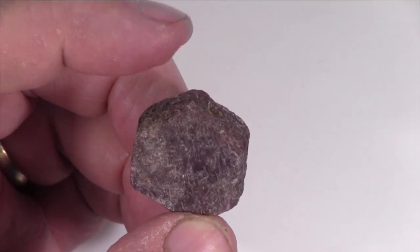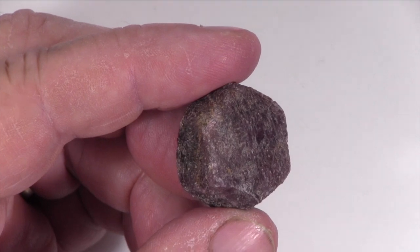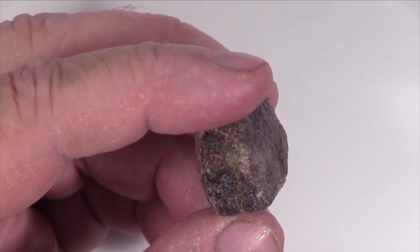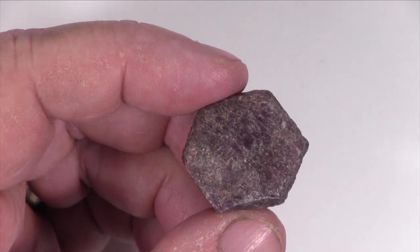The color of this specimen is red and it has a white streak. Although since it is harder than the streak plate, you have to powder the specimen by other means to analyze its streak.